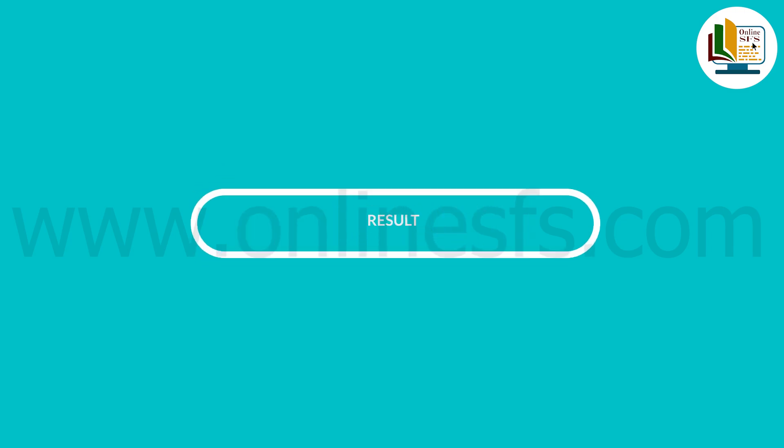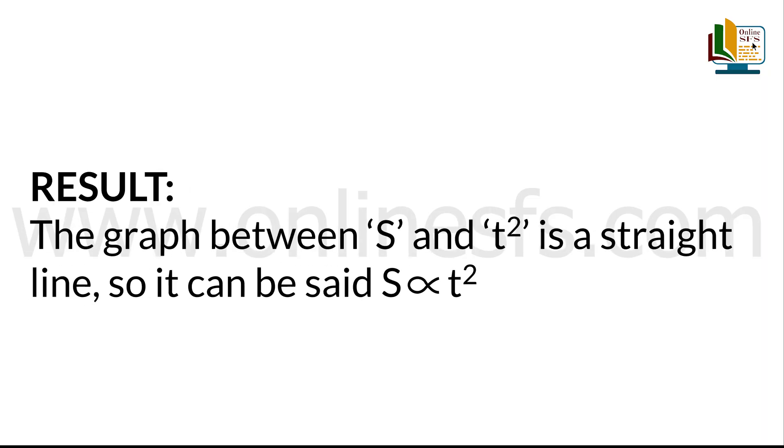Let's see the result. The graph between s and t square is a straight line so it can be said that s is directly proportional to t square.